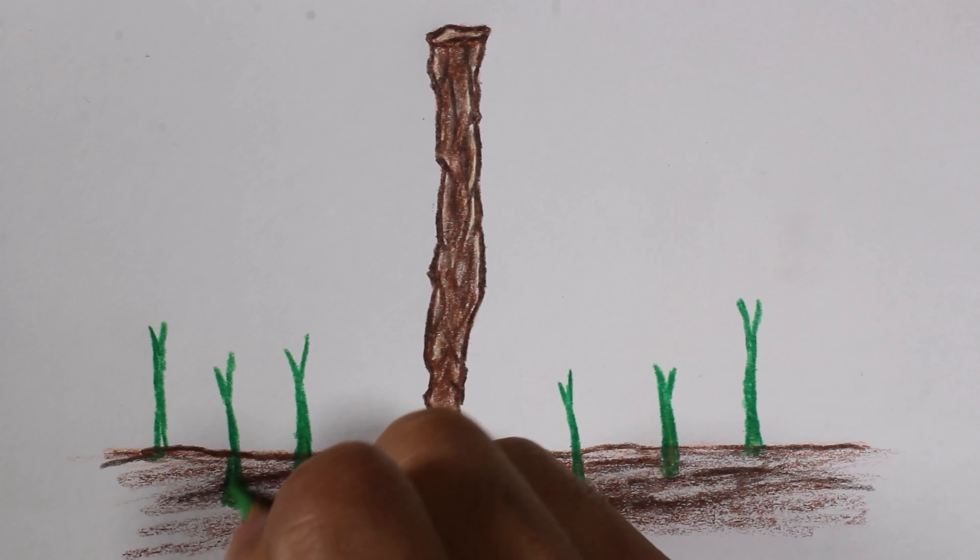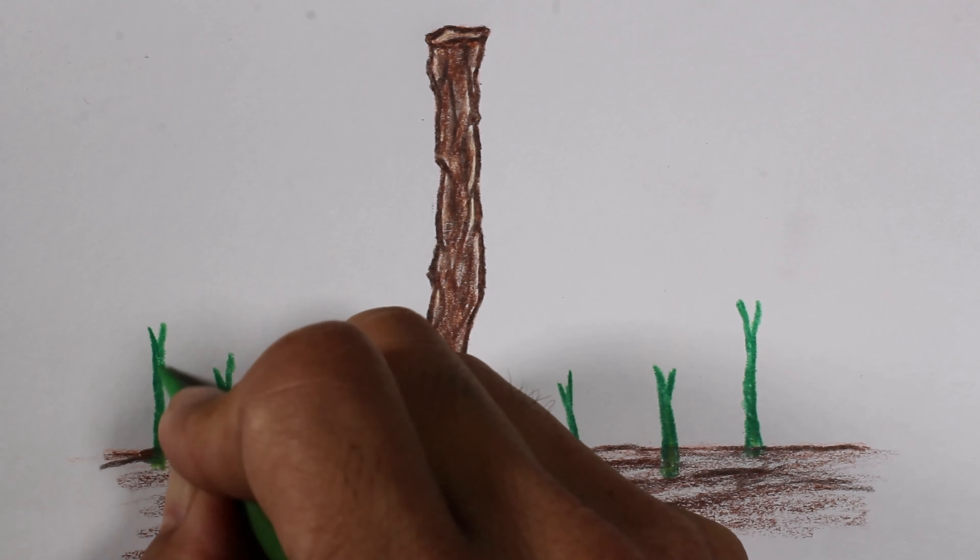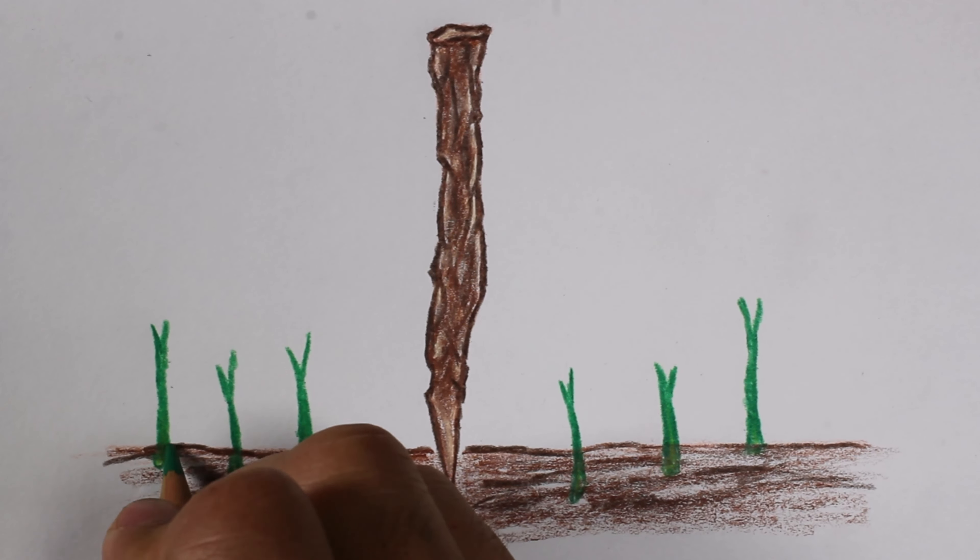As a side note, taro is also known as talo or kalo in Samoa. Taro is also known as kalo in Hawaii.